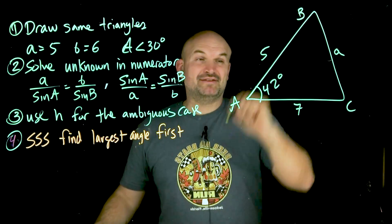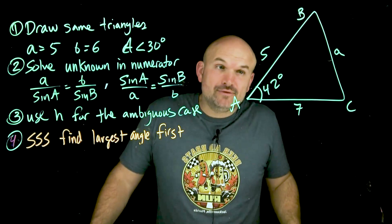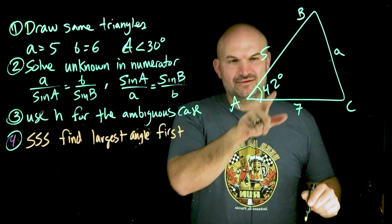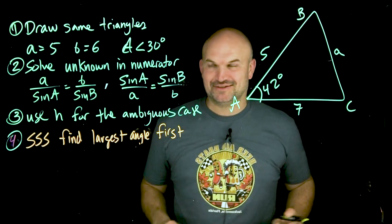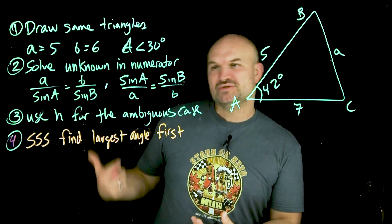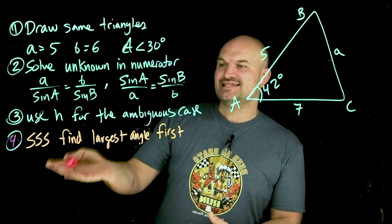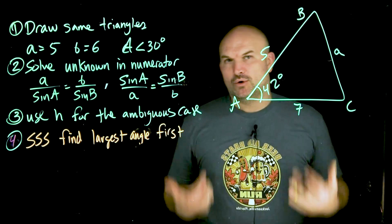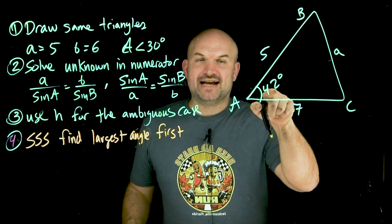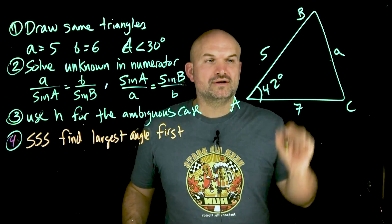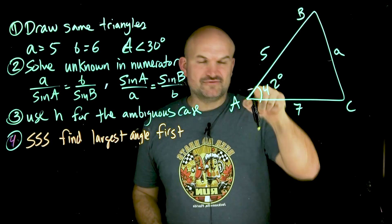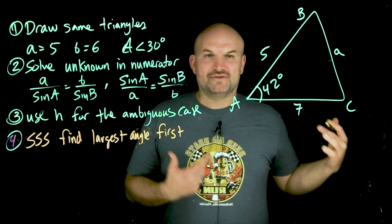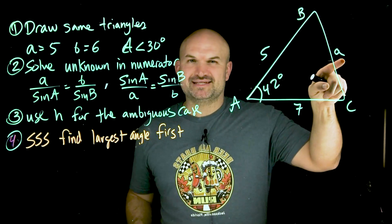Tip number five comes when we have a side-angle-side triangle. We can't use the law of sines here because I only have one side length, one angle, and another side length — I can't create a proportion. Unlike the previous SSS example where you always find the largest angle first, with SAS there's only one way to go: whatever your angle is, that is the side length you'll solve for using the law of cosines. So if angle A is 42 degrees, I need to solve for side length a, because that's the information I need.